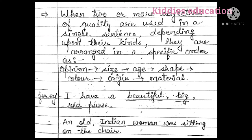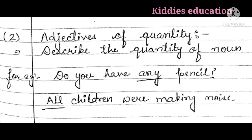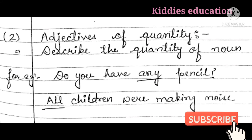The second kind of adjective is adjectives of quantity. These words describe the quantity of a noun — that is, they answer 'how much' of that noun. For example: 'Do you have any pencil?' — any asks about the quantity. 'All children were making noise' — all describes how many children. Words like several, all, enough, whole, etc. are included in adjectives of quantity.